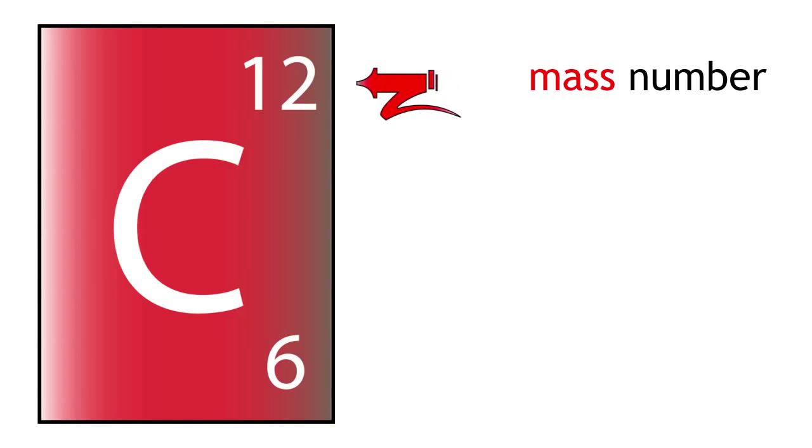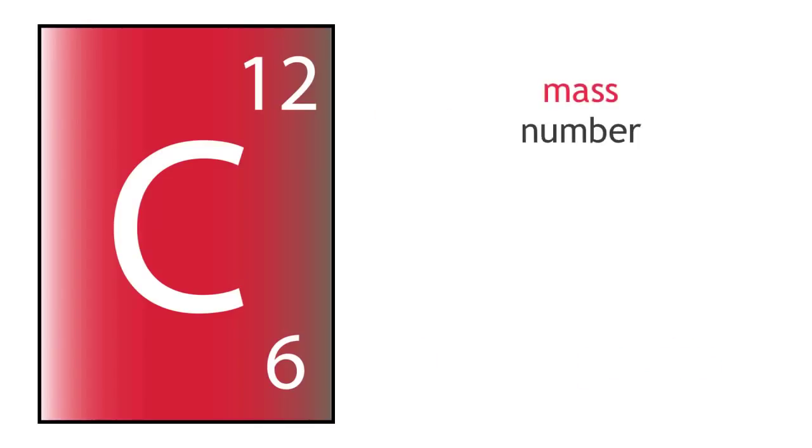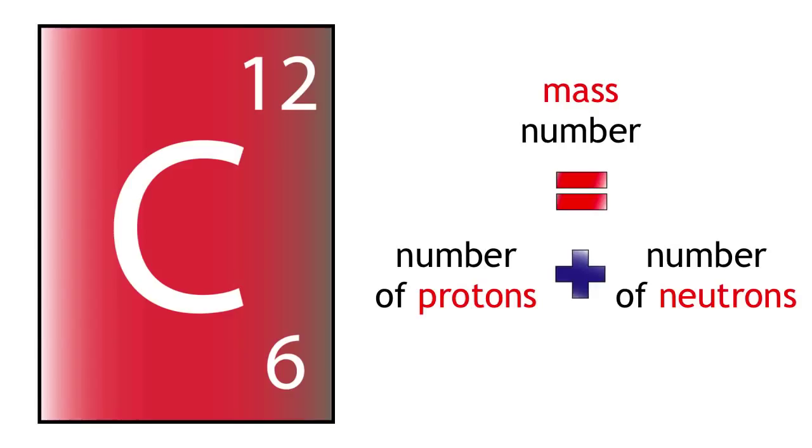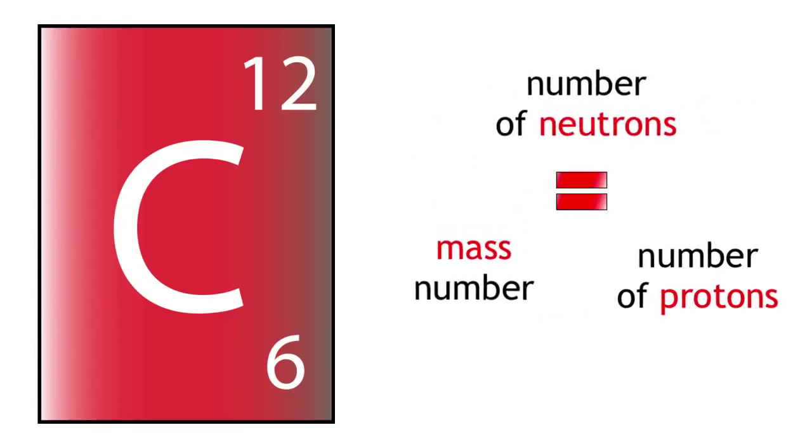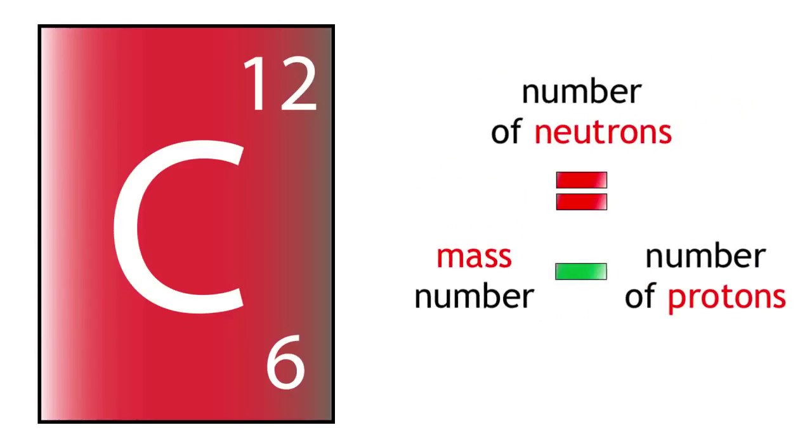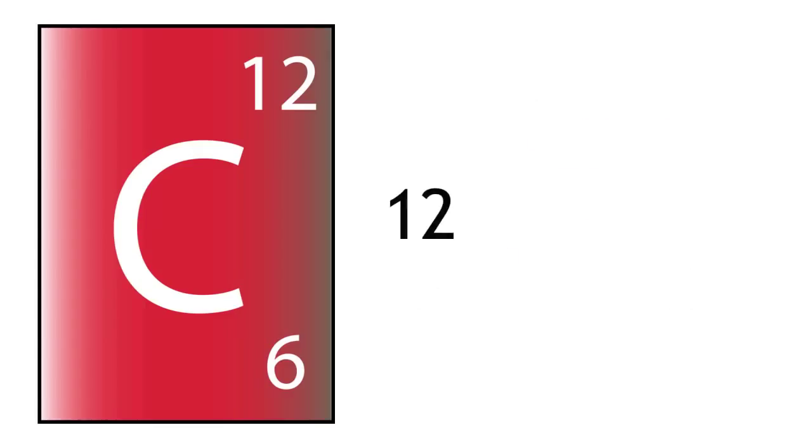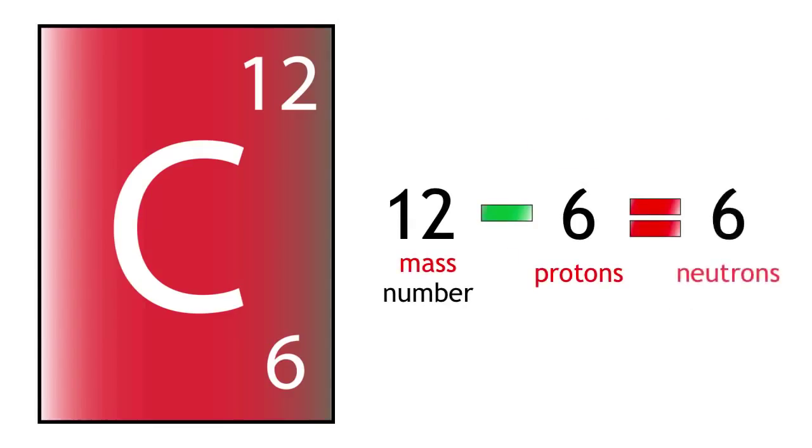Carbon-12 has a mass of 12 and 6 protons. Remember, mass number equals protons plus neutrons. So we can rearrange this formula to give us neutrons equals mass number minus protons. 12 minus 6 equals 6. Therefore, it has 6 neutrons.